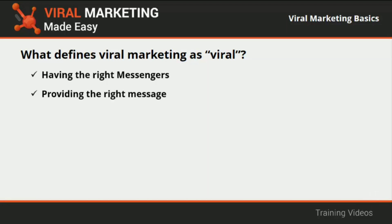In simpler words, the message needs to be something that people will want to show to their connections. The third criterion is being in the right environment. Although the popularity of a message cannot be predicted, changes in the environment and context in which the message is intended to be spread can lead to great results. Timing and context surrounding the launch of a message are crucial to make it go viral.